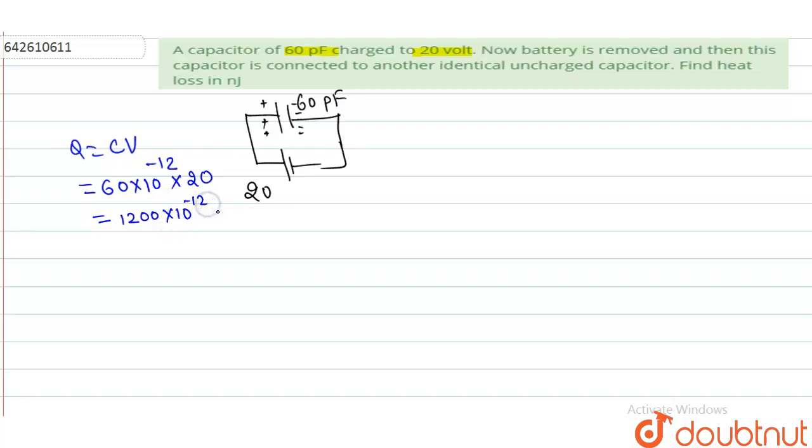What will be its energy? Initial energy I am writing as half CV squared. Here I can write it: half C is 60 picofarad, 60×10^-12, and voltage I am writing as 20 volts. Now,